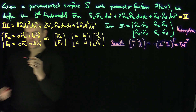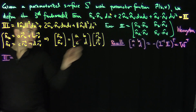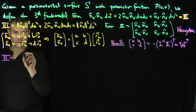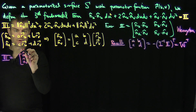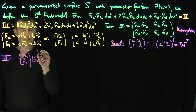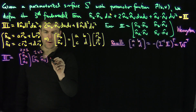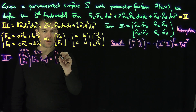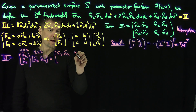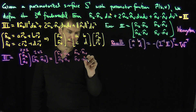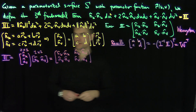Now I'm going to write my matrix III in the following way. III can be written as the column vector [N_U, N_V] hit with the row vector [N_U, N_V]. This is a two-by-one times one-by-two matrix product. The result gives exactly N_U dot N_U, N_U dot N_V, N_U dot N_V, N_V dot N_V — which is indeed the third fundamental form.